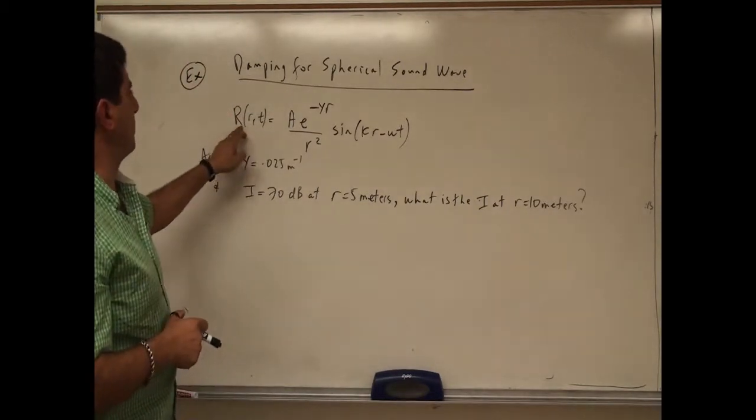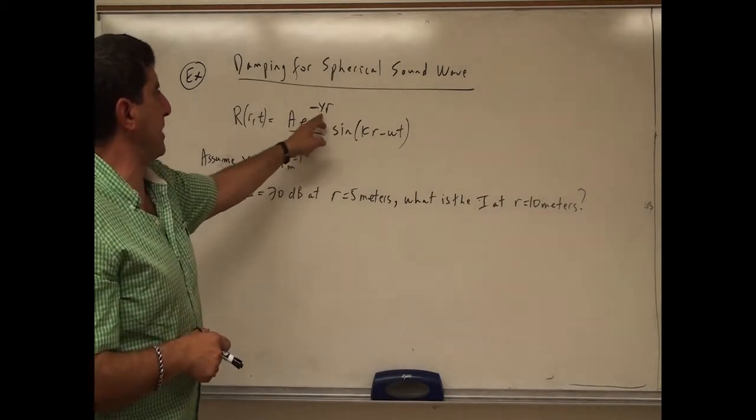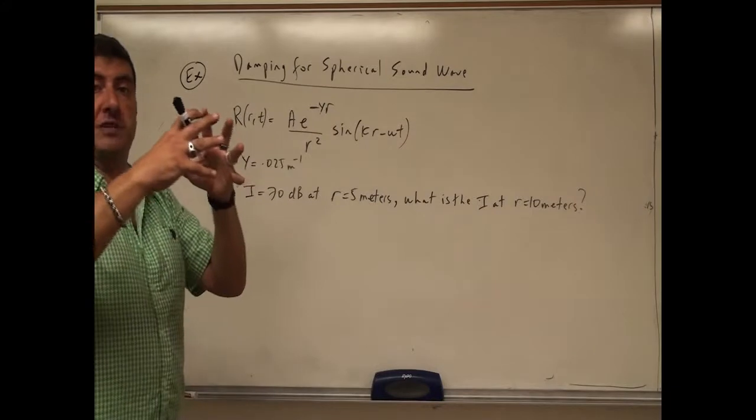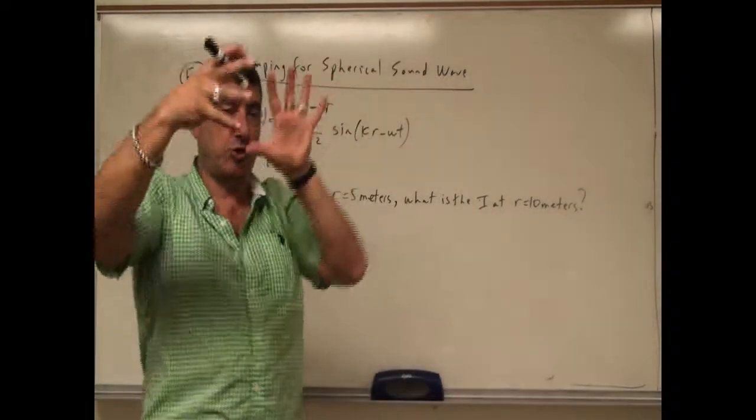So then we have here a big R, R of T is amplitude E to the minus gamma R. This is the damping constant again. We're assuming now the sound wave is spreading spherically in all directions equally.